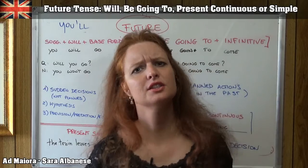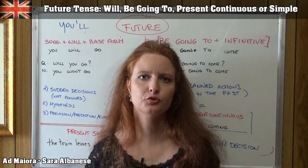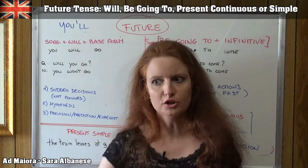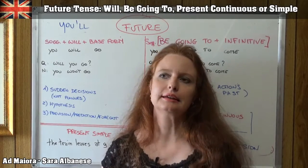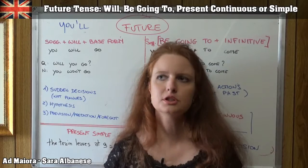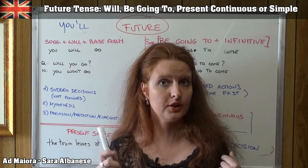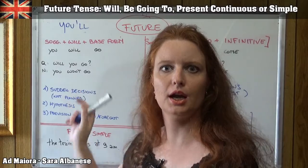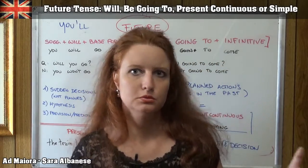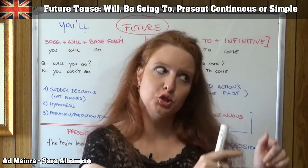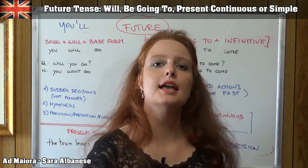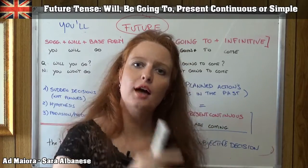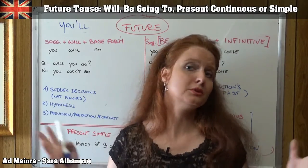Students sometimes ask how to distinguish 'won't' from the verb 'to want' — meaning to express a desire or wish. The pronunciations are slightly different, but if you can't distinguish them, think about the structure: 'I won't go' has no 'to', whereas with the verb 'want' you say 'I want to go' or 'I don't want to go' — there's always the preposition 'to'. If you remember this, you'll never make mistakes.